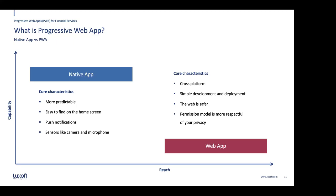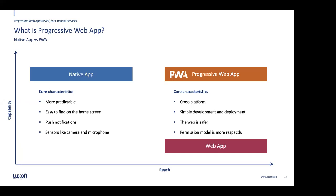But it doesn't matter how easy it is or how many people use your web app if you don't have the same capabilities as native — people won't keep using it. Progressive web apps are exactly that: they try to combine the capabilities of native apps with the reach of the web, bringing the best of both worlds and improving the quality of the end-to-end user experience quite a lot.